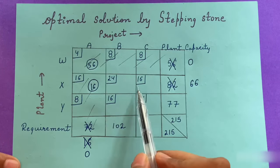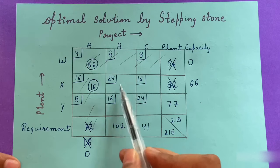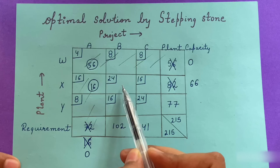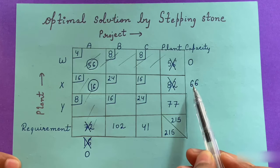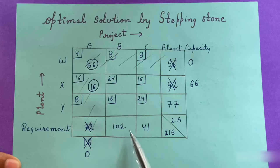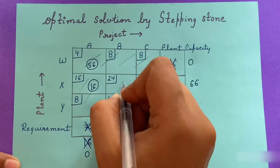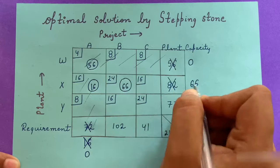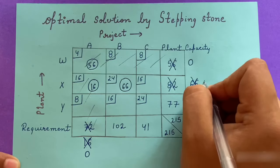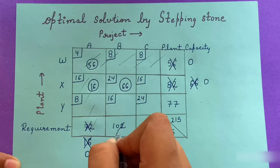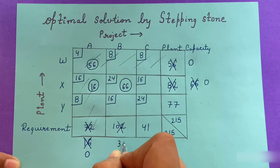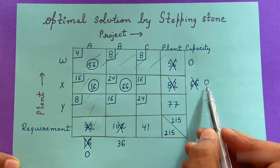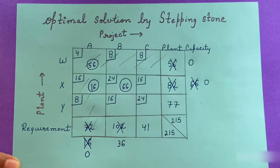This column is now crossed off. In the remaining matrix, the northwest corner has a plant capacity of 66 units and a requirement of 102 units, so we supply 66 units here. This is the minimum value, so plant capacity goes to 0 and the requirement changes to 36 units. This row is then crossed off.